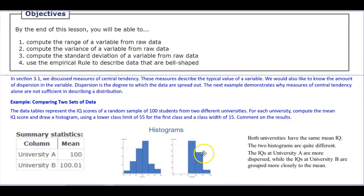But although the two histograms are quite different, the IQs at University A are more spread out, you can see how it's more spread out, or we say dispersed, while the IQs at University B are grouped more closely to the mean.